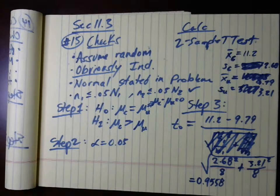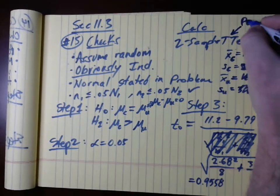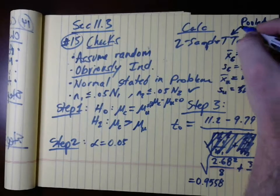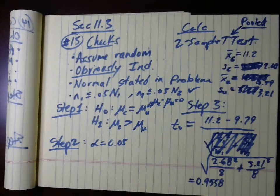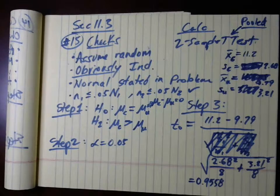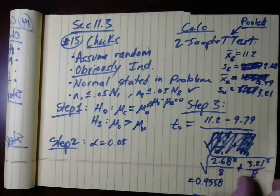Use the pooled option. It makes a difference because of the degrees of freedom. You'll notice that the degrees of freedom for the t-distribution matter because we need them for the critical value. Since we're using t, we need to know the degrees of freedom for the critical value lookup.